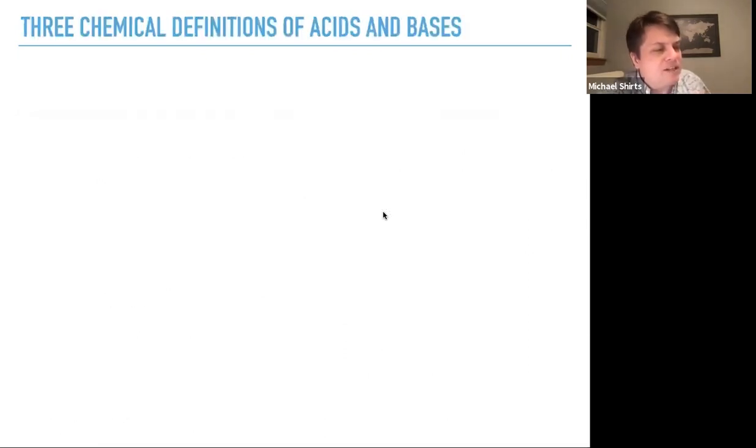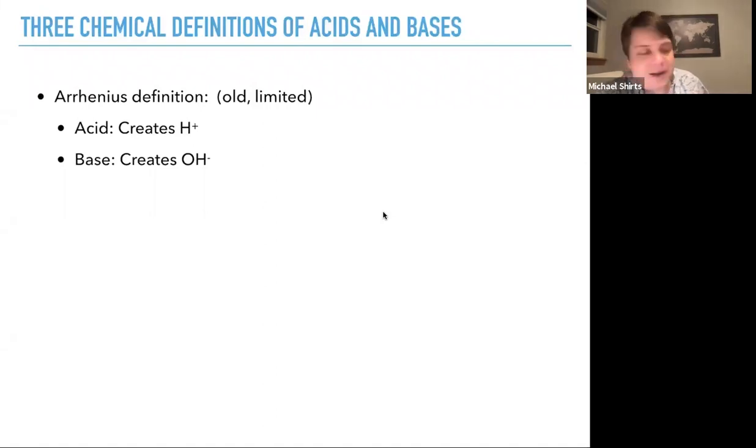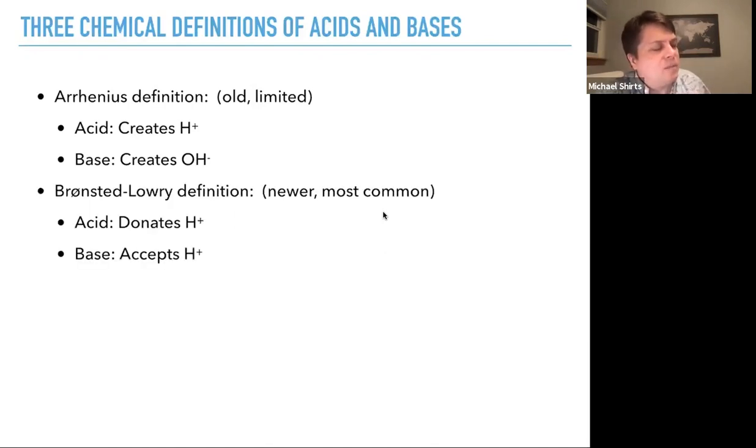Three chemical definitions of acids and bases that can be useful. The old definition, the first one was the Arrhenius definition, where an acid creates an H+ and a base creates a hydroxide OH-. But people realized that didn't quite fit the bill. So the Bronsted-Lowry definition is newer and probably the most common: an acid is a molecule that donates a proton H+, and a base is a molecule that accepts a proton. You have this pairing - donating an H and accepting an H. And that covers more things. For example, ammonia does not actually create OH- directly, but it does accept an H+.